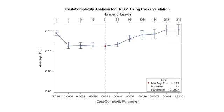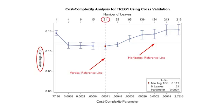By default, PROC HPSplit creates a plot of the cross-validated average standard error, ASE, based on number of leaves for each of the trees generated on the training sample. A vertical reference line is drawn for the tree with the number of leaves that has the lowest cross-validated ASE — in this case, the 21-leaf tree. The horizontal reference line represents the average standard error plus one standard error for this complexity parameter. Often, the 1-SE rule is applied when pruning via the cost complexity method to potentially select a smaller tree that has only a slightly higher error rate than the minimum ASE. Selecting the smallest tree with an ASE below the horizontal reference line implements the 1-SE rule, and by default SAS uses this rule to select and display the final tree.